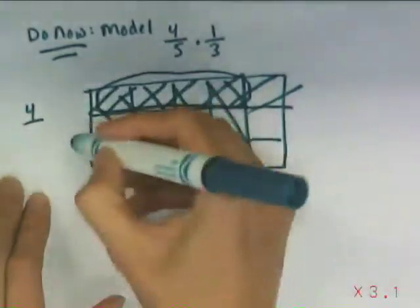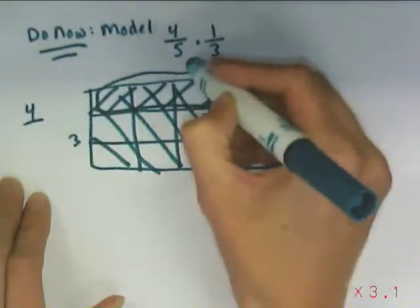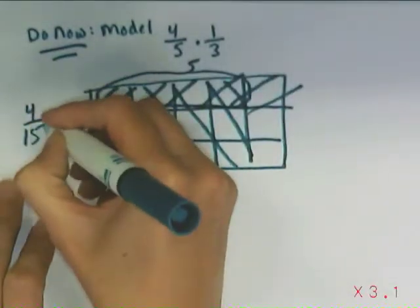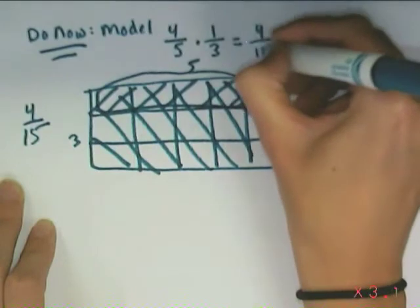How big are the pieces? Well, it's 3 by 5. They're 4 fifteenths. So my answer to this is 4 fifteenths.